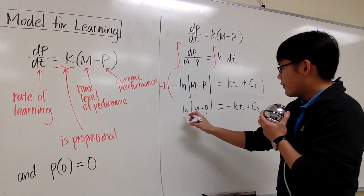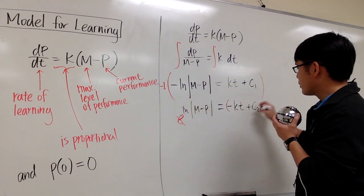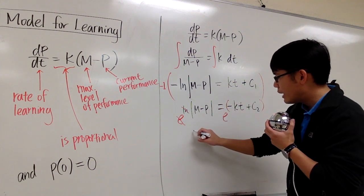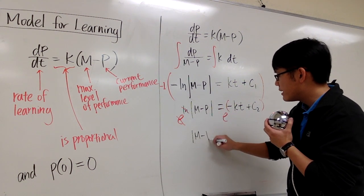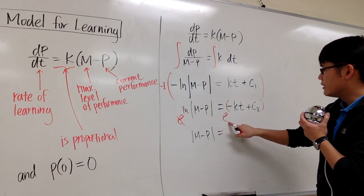To get rid of the ln, I will do e to the power so they cancel. I'll pretend this is my exponent, and now I'll do e to the power. On the left-hand side, I will have absolute value m minus p. And this is equal to, well, if you take a look of this,